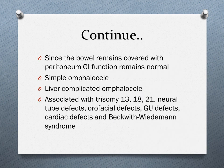Sometimes a portion of the liver also herniates through the umbilical ring, so we can see the liver sealed within the umbilical cord along with the bowel. This is called liver-complicated omphalocele. The real problem with omphalocele is that it's associated with a number of genetic abnormalities: mainly trisomy 13 (Patau syndrome), trisomy 18 (Edwards syndrome), trisomy 21 (Down syndrome), and also a number of other defects.